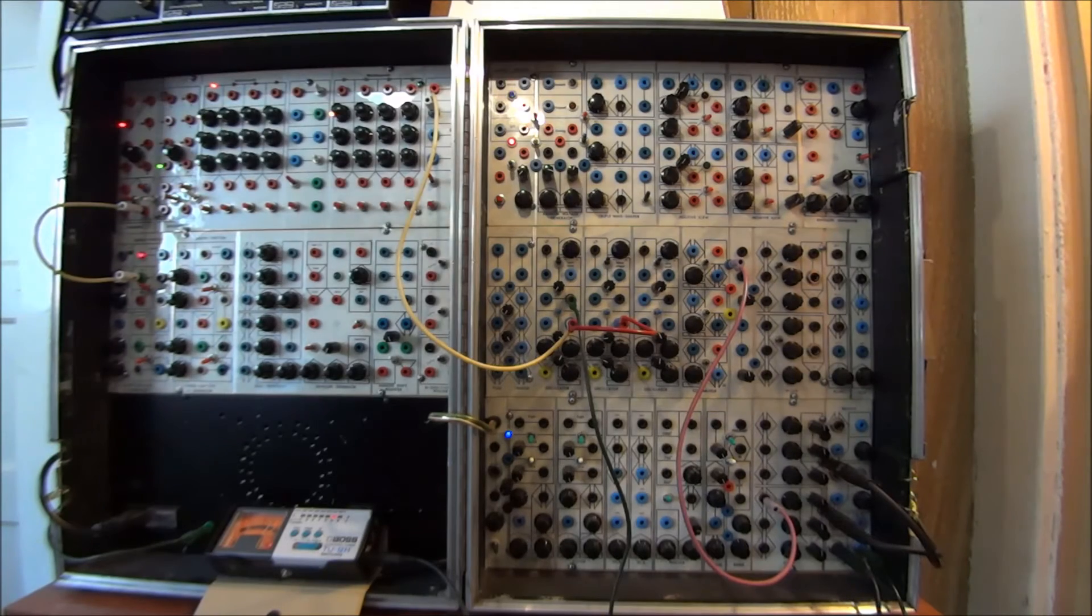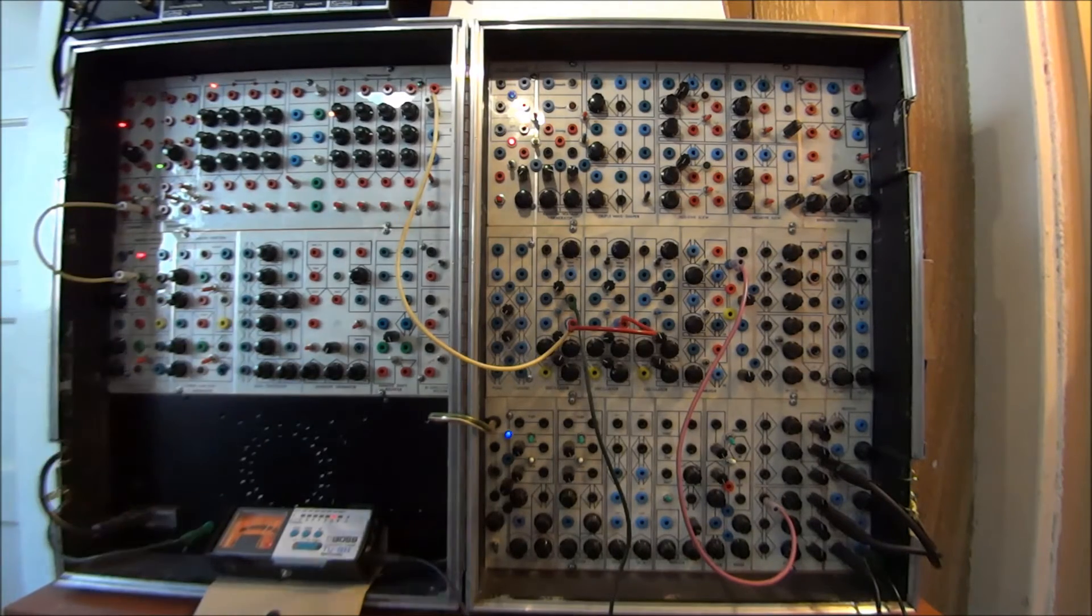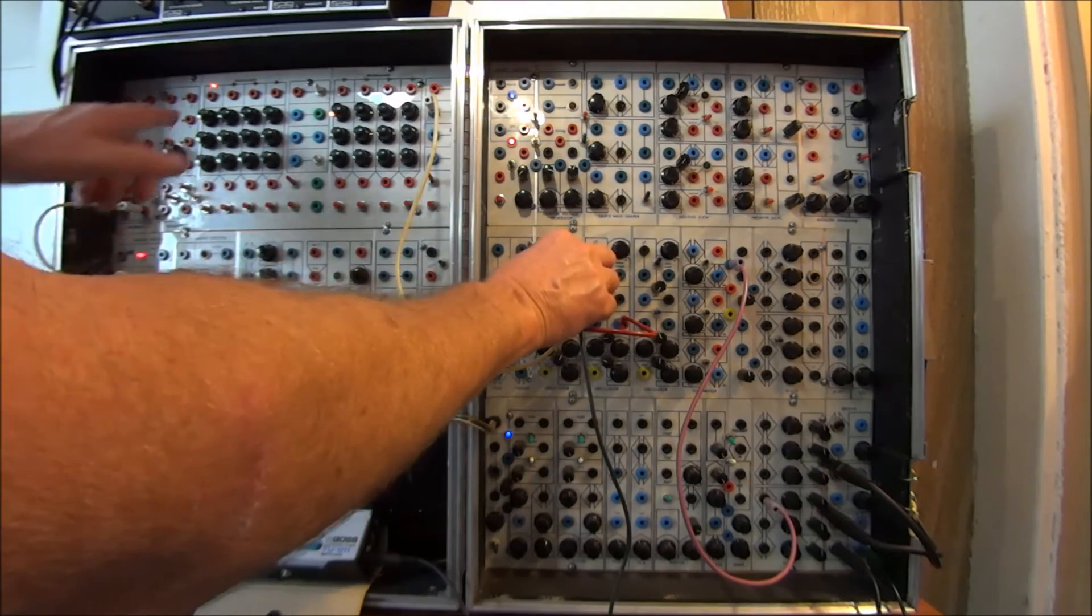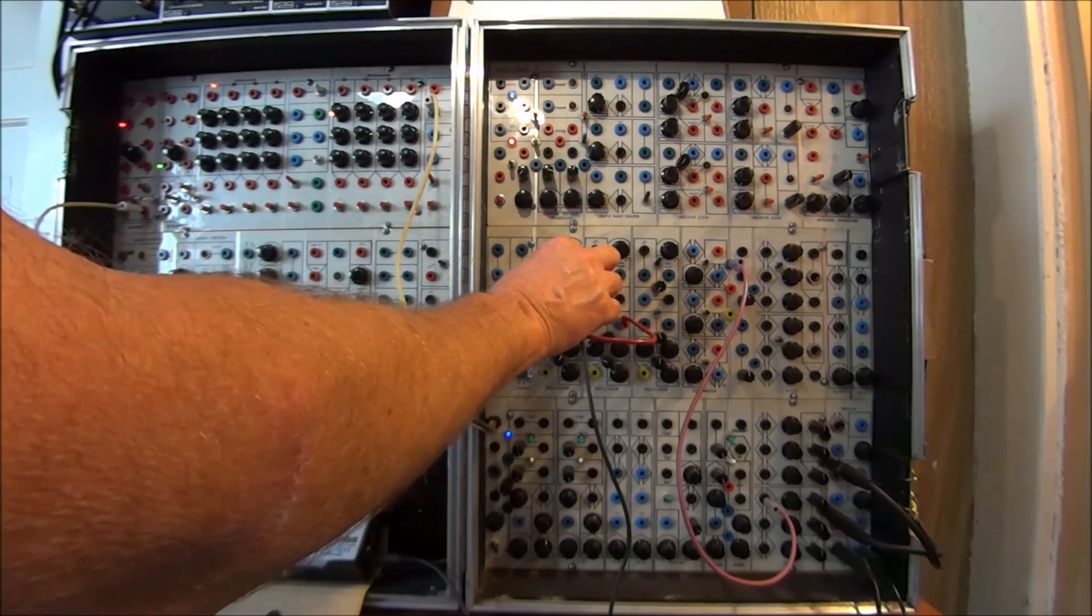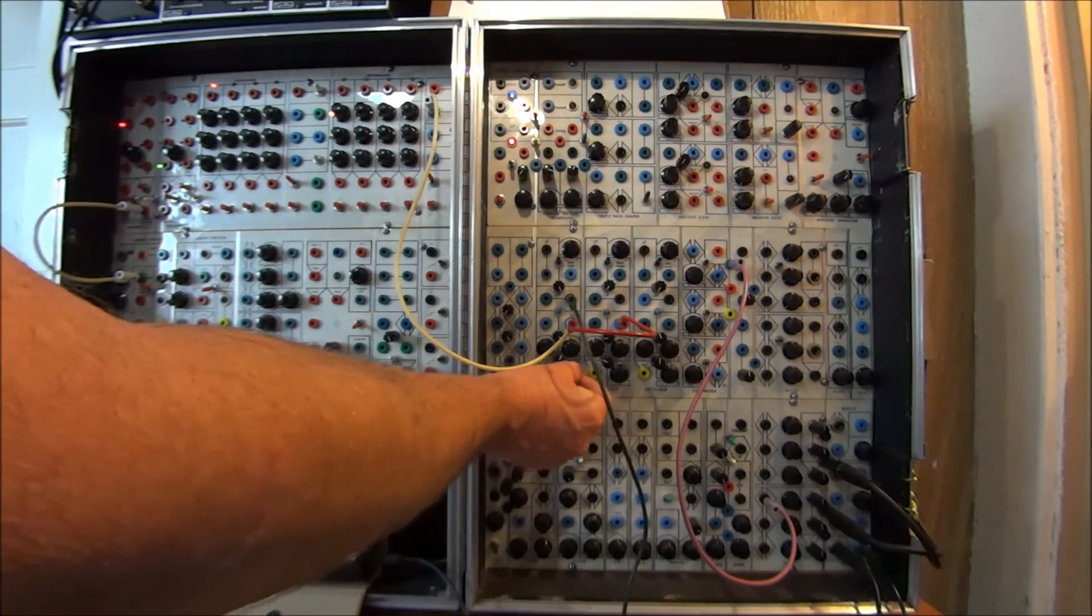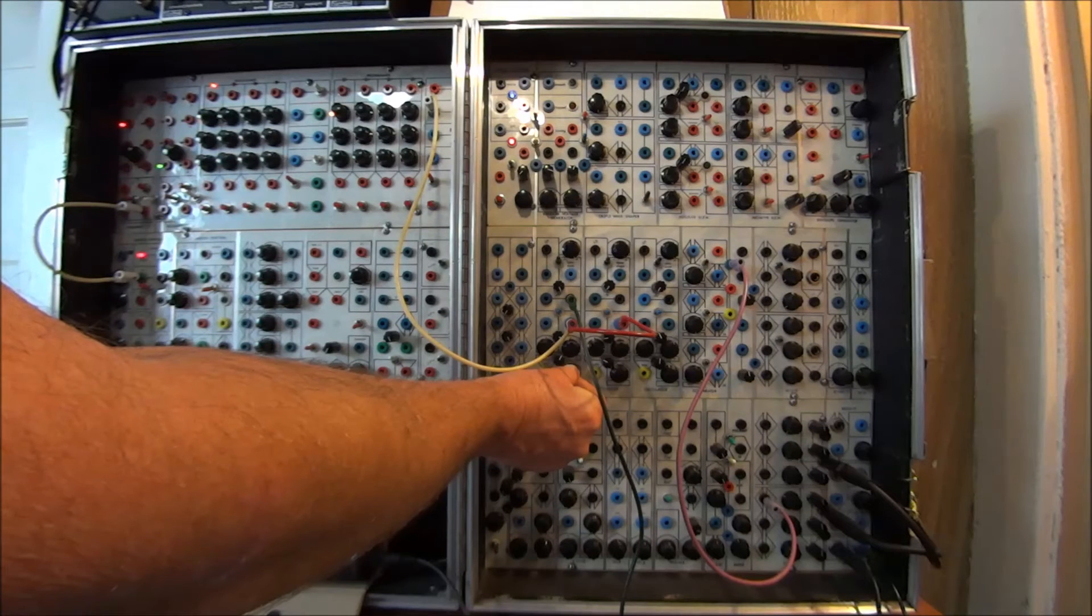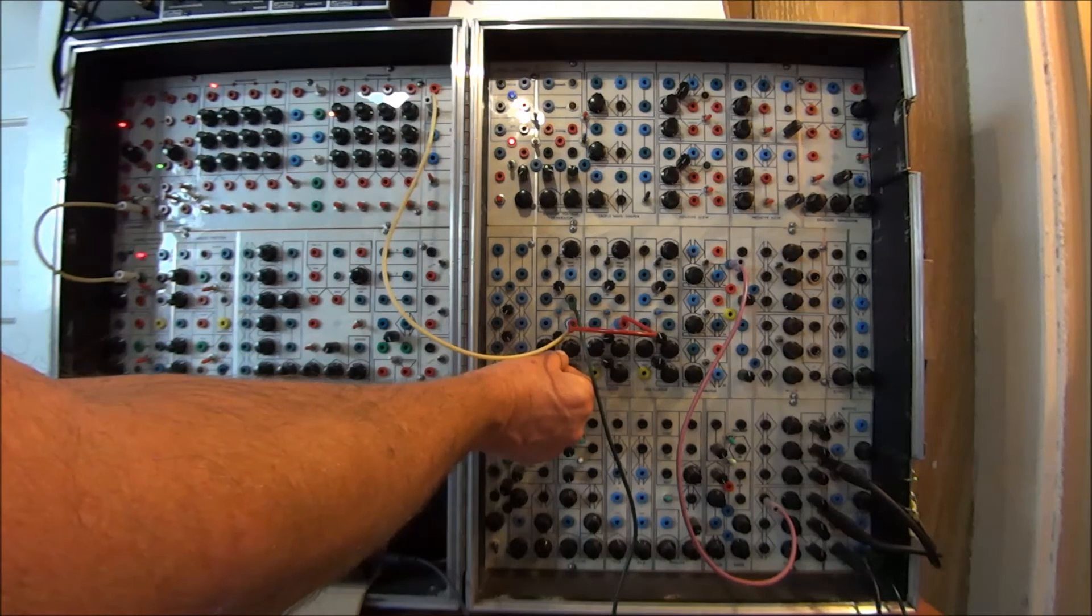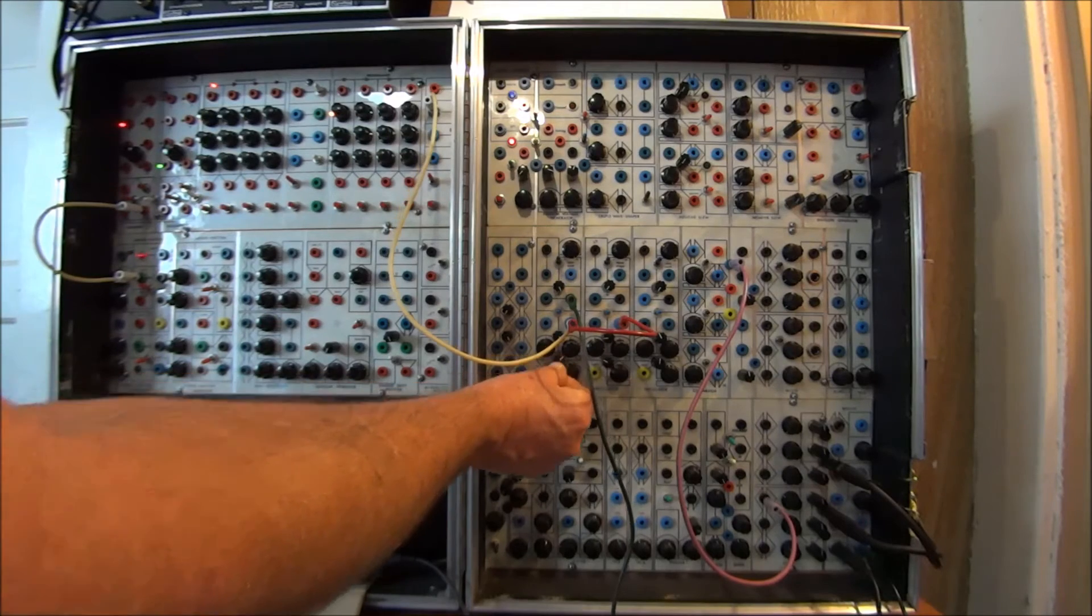So the first thing that I need to do is to get that C happening here. The C is arbitrary, of course, but I set up the sequence beforehand just to make things go a little quicker. So the first thing to do is to bring this up to the C. I'm going to bring it up and then fine tune it. Okay. There's a C.